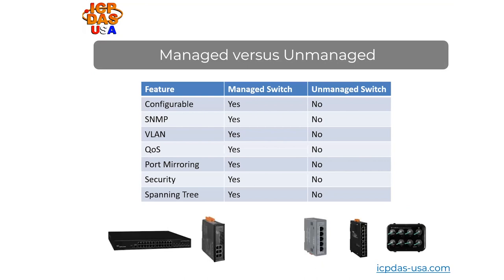Unmanaged switches enable network communication between connected devices and are usually plug and play. You power them up, plug in your Ethernet cables, and connect them to your network devices. They provide basic connectivity by automatically forwarding network traffic to connected devices like a repeater. Managed switches have software running inside, allowing for configuration and monitoring of each port. They support SNMP, which provides statistics including throughput, network errors, and port status.